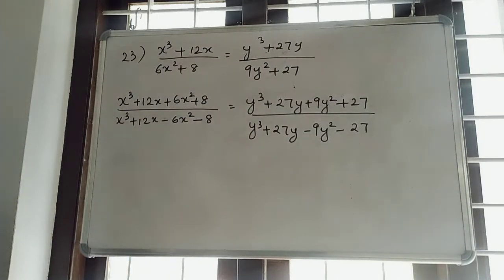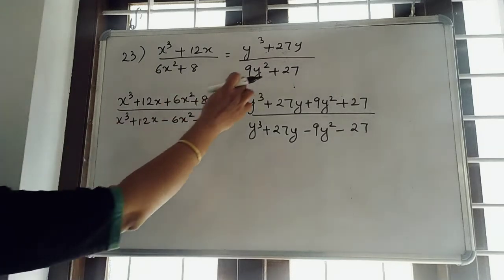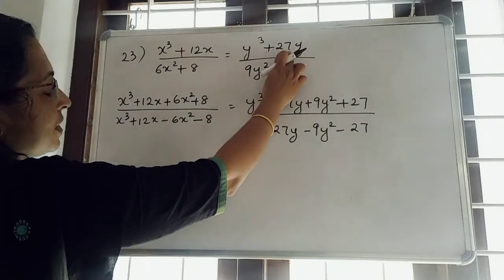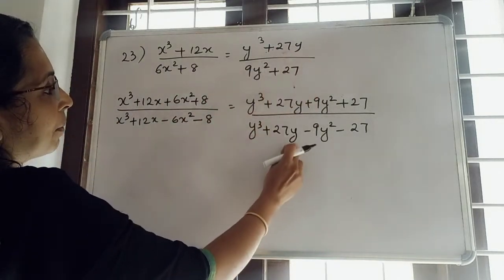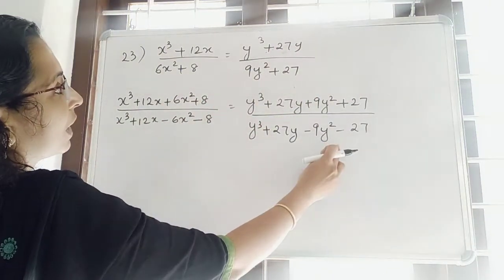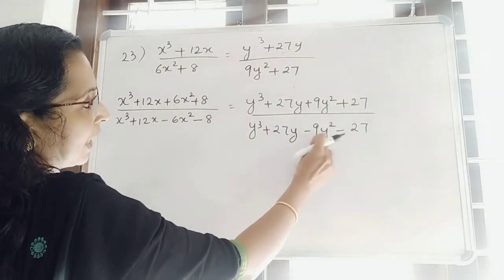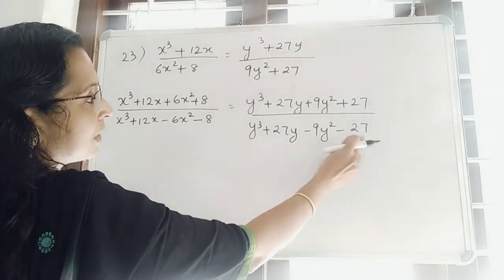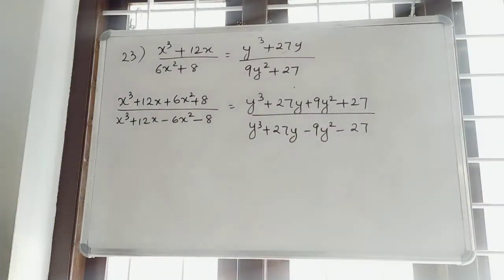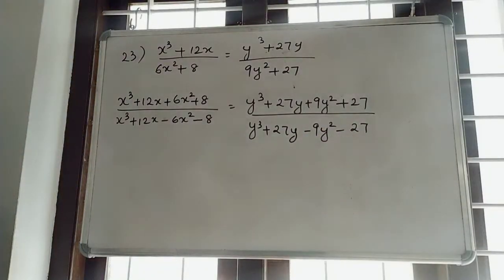So, y³ + 27y + 9y² + 27 divided by y³ + 27y minus of 9y² + 27. So, it will be 9y² minus 27. Just do in the working column.